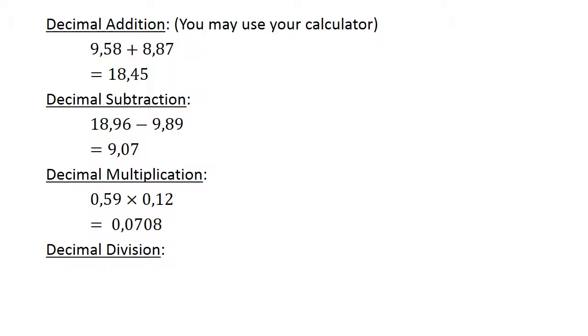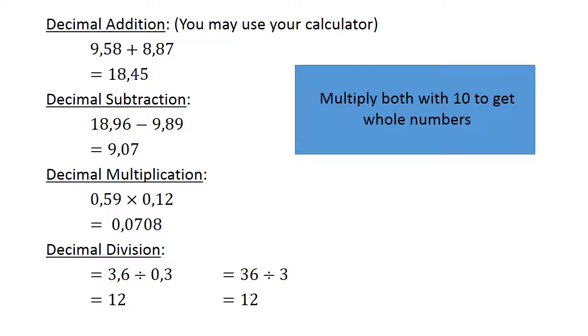Decimal division: 3.6 divided by 0.3. Multiply both by 10 to get whole numbers: 36 divided by 3 equals 12.